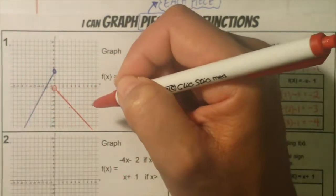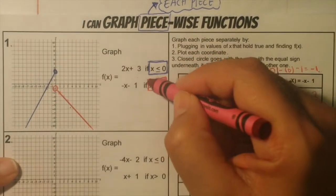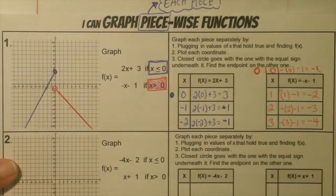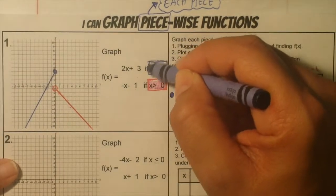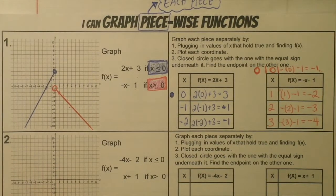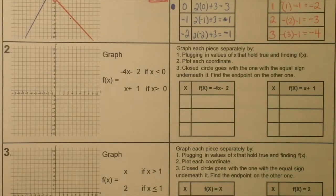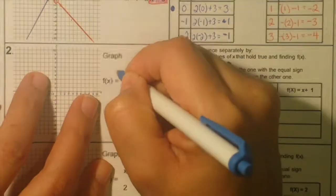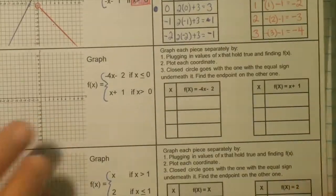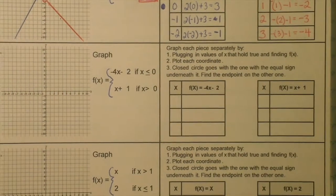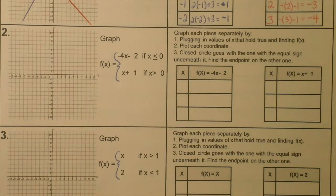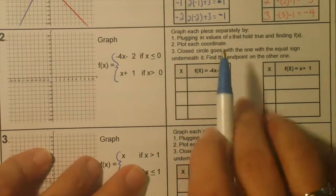And that's all there is to graphing a piecewise function. You could still do y equals mx plus b, but this way you just don't make mistakes. Now looking at number 2, again graphing each piece separately. This one is negative 4x minus 2 for the first piece if x is less than or equal to 0.